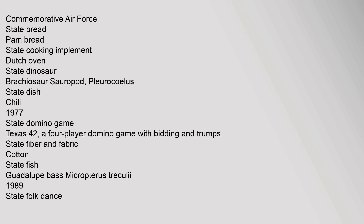Other Official Designations — Type, Symbol, Date Designated, Notes. State Air Force: Commemorative Air Force. State Bread: Pan de Campo. State Cooking Implement: Dutch Oven. State Dinosaur: Brachiosaur Sauropod (Pleurocoelus). State Dish: Chili, 1977. State Domino Game: Texas 42, a four-player domino game with bidding and trumps. State Fiber and Fabric: Cotton. State Fish: Guadalupe Bass (Micropterus treculii), 1989.